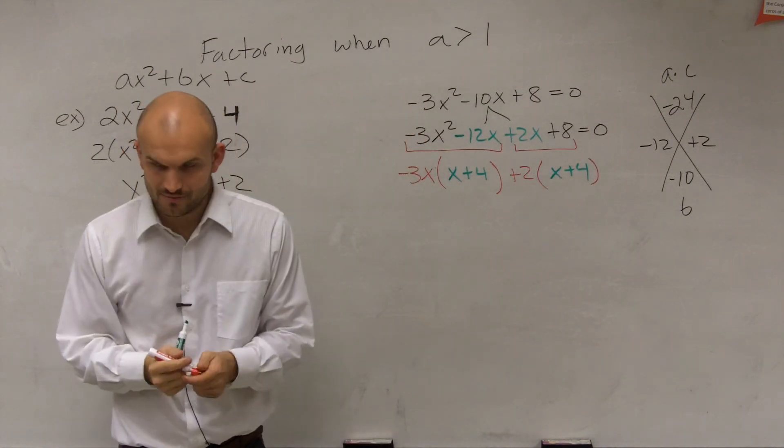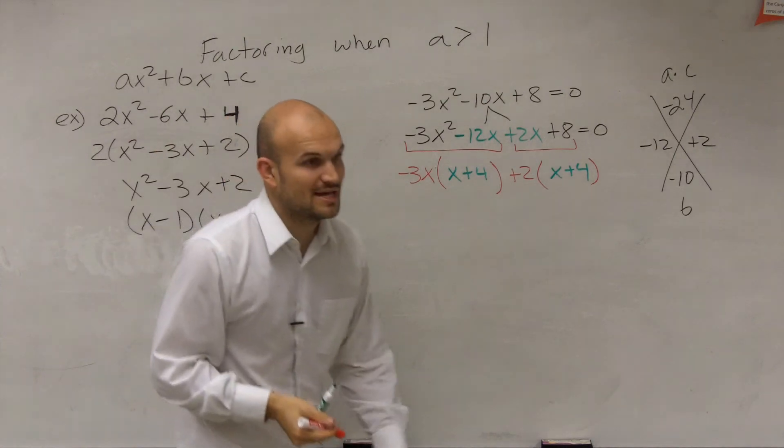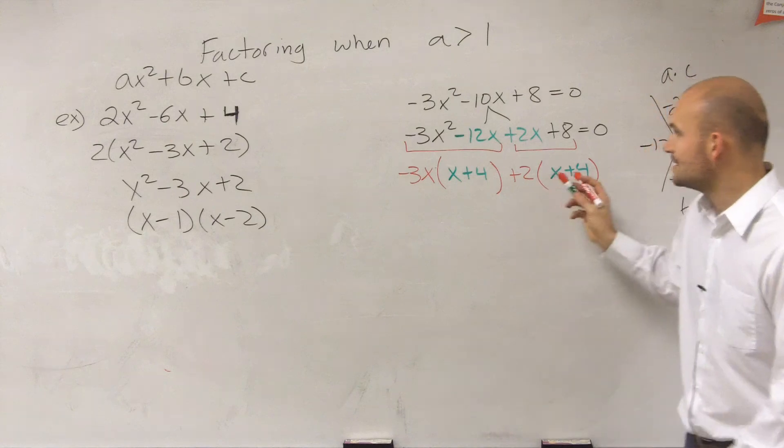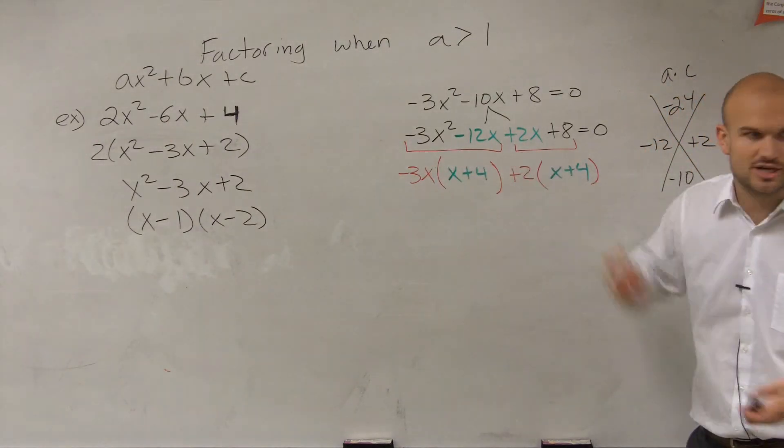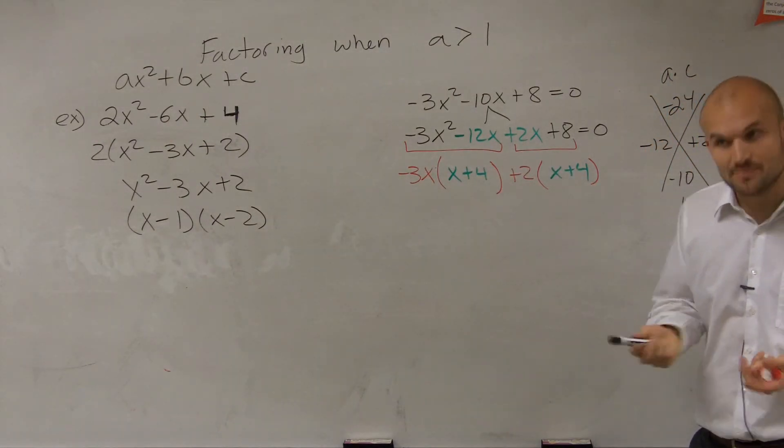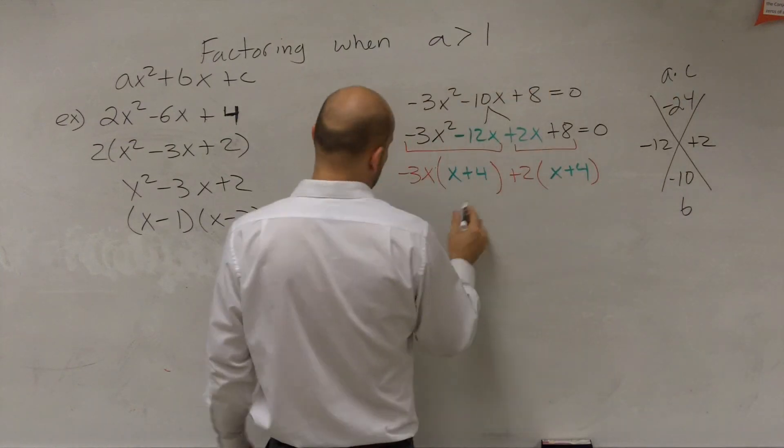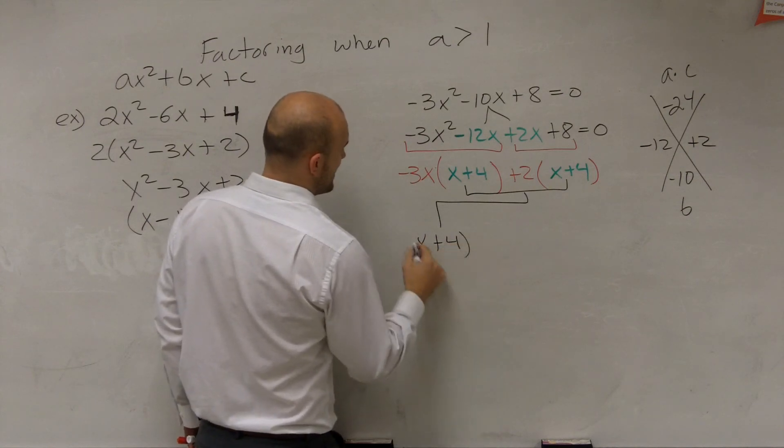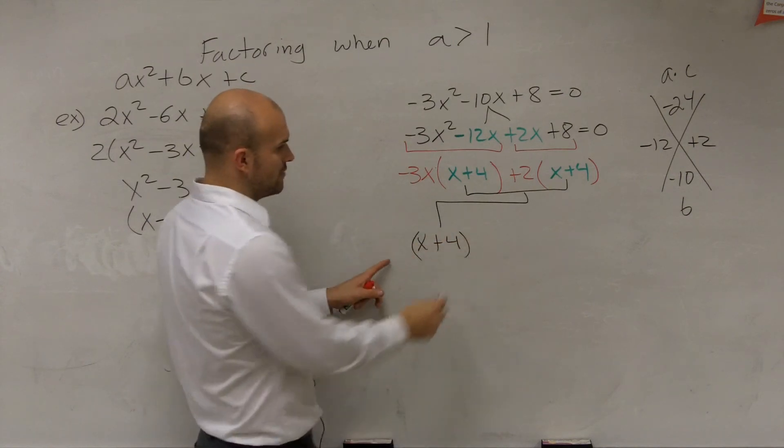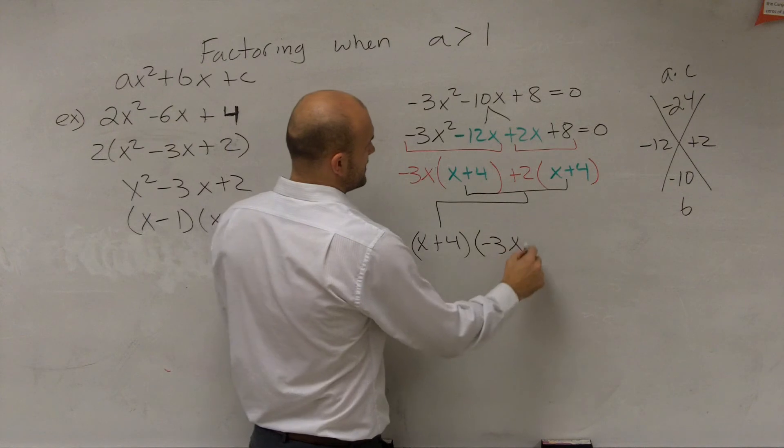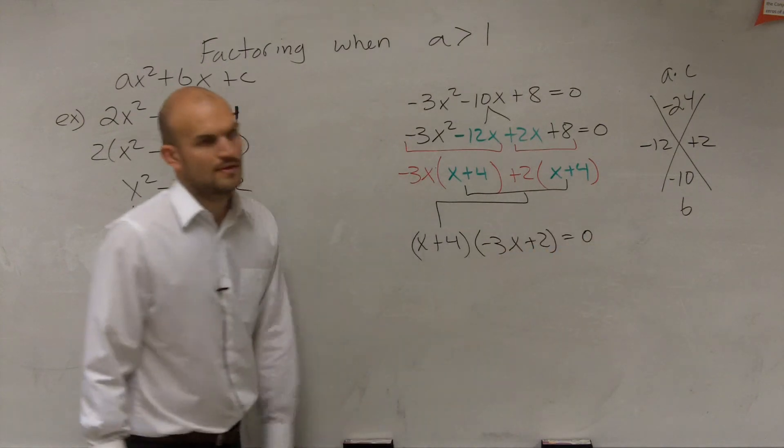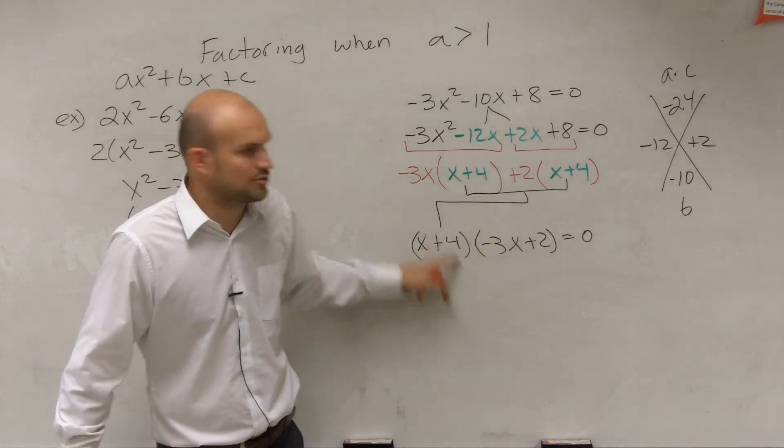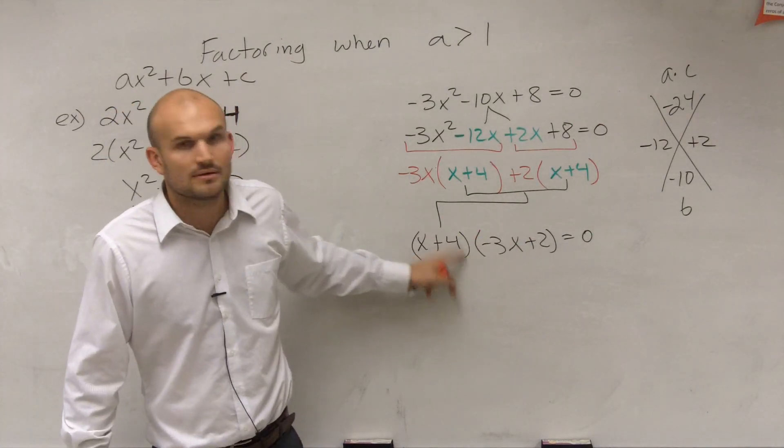We're still not done because we don't have this as a multiplication problem yet. But can I factor out something else? Do they share something? x + 4. Now I can factor out the (x + 4), leaving (-3x + 2) = 0. Have I now created a multiplication problem of two factors? Yes.